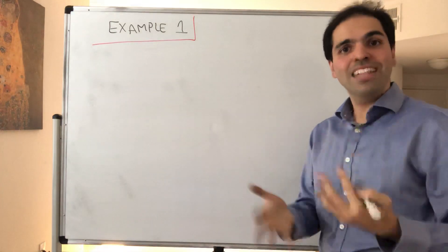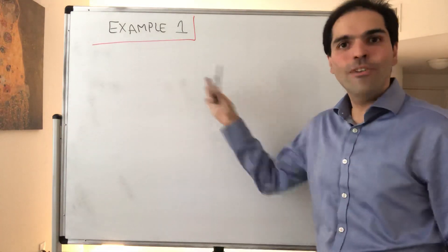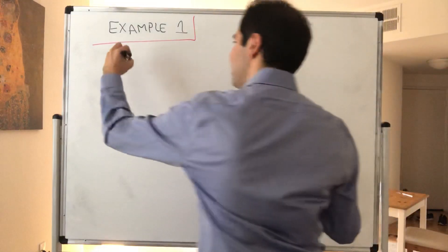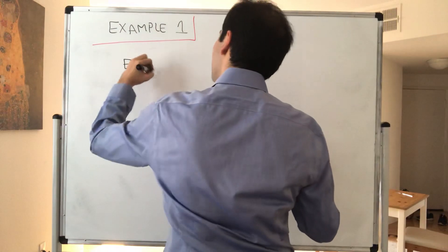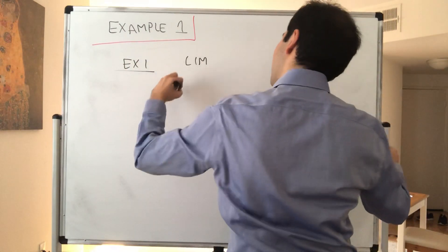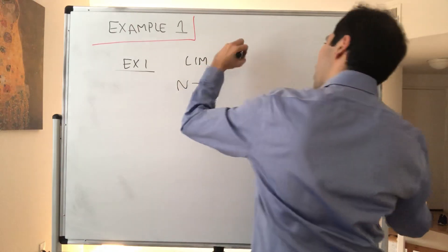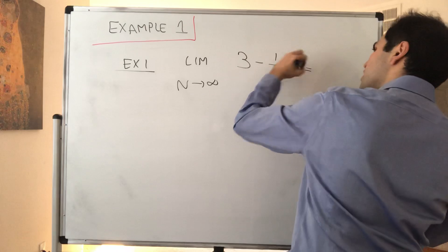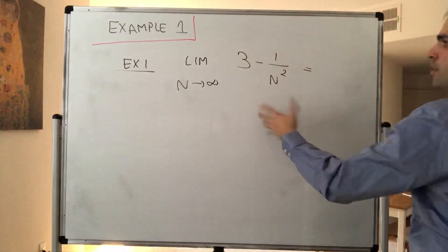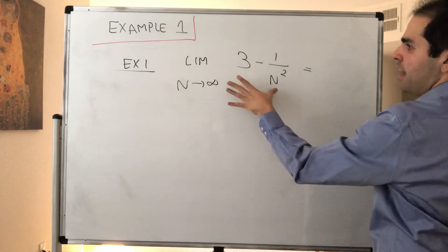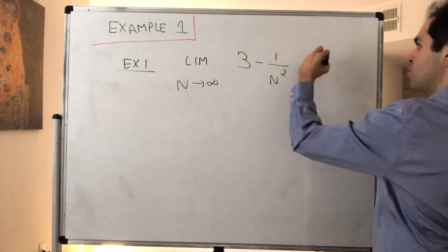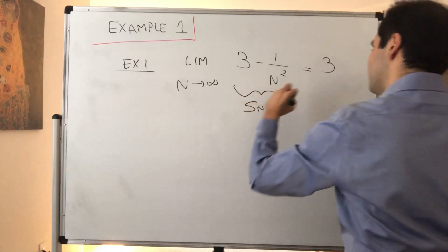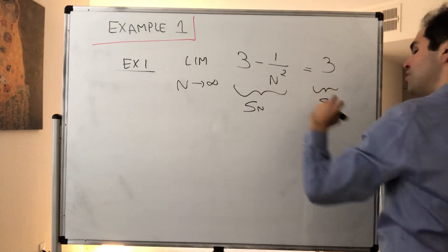All right, thanks for watching. Today we would like to practice with the rigorous definition of a limit, and more precisely what we would like to show is that the limit as n goes to infinity of 3 minus 1 over n squared is, well, intuitively this should go to 0 and therefore 3 minus 0 should be 3. And again, this is your sequence Sn and this is your limit S.